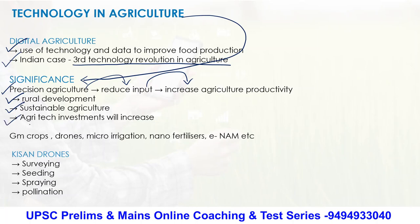There will be rural development, sustainable agriculture, and agri-tech investments which will increase mechanization. Whatever concerns and issues were addressed in the report can be solved by increasing technology in agriculture. Examples include GM crops, drones, micro-irrigation facilities, nano-fertilizers, and E-NAM — a marketing network application which groups all mandis — as examples of technology in agriculture.